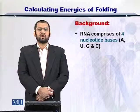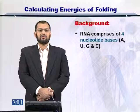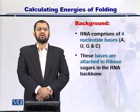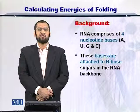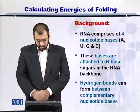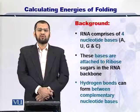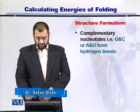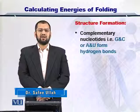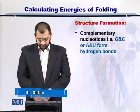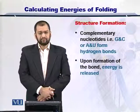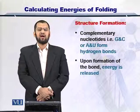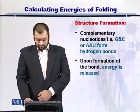As you know, RNA is comprised of four nucleotides A, U, G and C, and they are attached to the ribose sugars in the backbone of the RNA molecule. Hydrogen bonds can form between the complementary nucleotides — G and C, and A and U. As a result, energy is given out after the bond is formed and the RNA molecule becomes more stable.